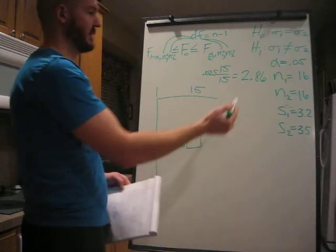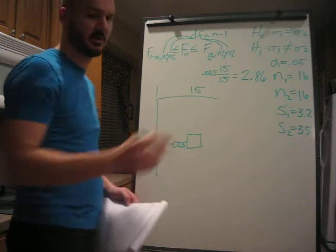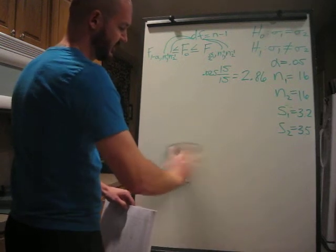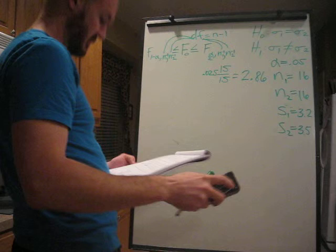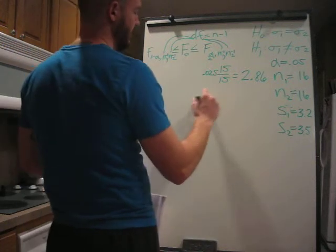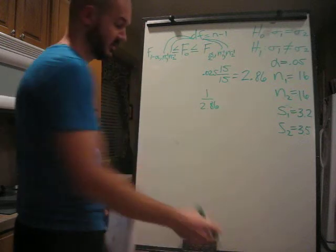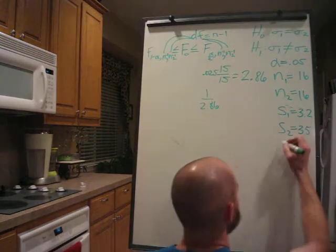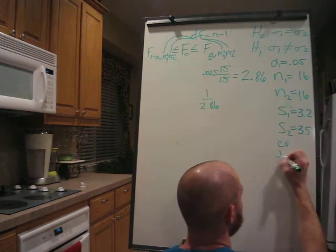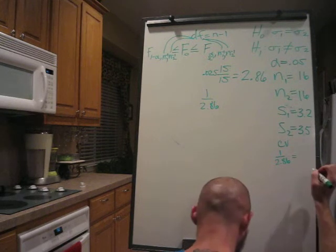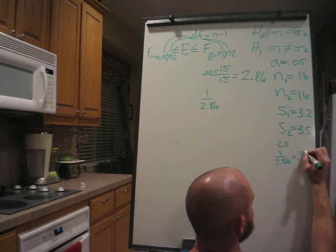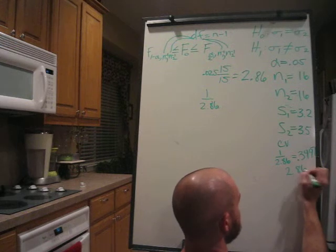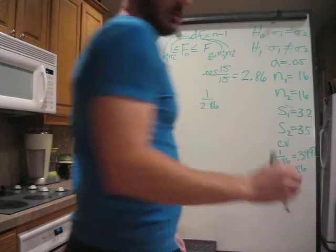Now since it's chi-square, it's not symmetrical, so we can't just do negative 2.86. It's not that easy. It's easy, but it's not that easy. So that's for the right side, I believe. Yeah, that's for the right side. The left side is gonna be 1 over 2.86. Not too difficult once you make sense of all that. So our critical values are 1 over 2.86, which equals .3497. And 2.86. Alright, cut that out of the way.